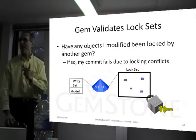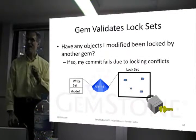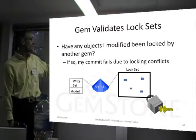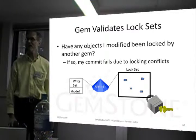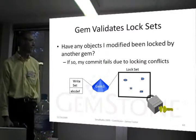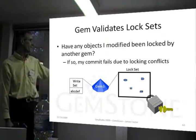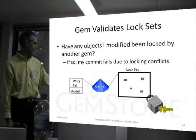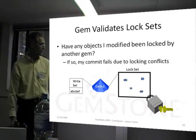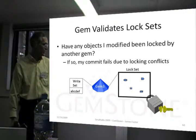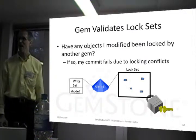Once we pass that check, then I have to check locks. Have any objects I modified been locked? Does someone else have a lock on them? If so, then I can't modify them. My commit fails due to a lock conflict. So I have to look through all the things I plan to write and see if anyone else has them locked.